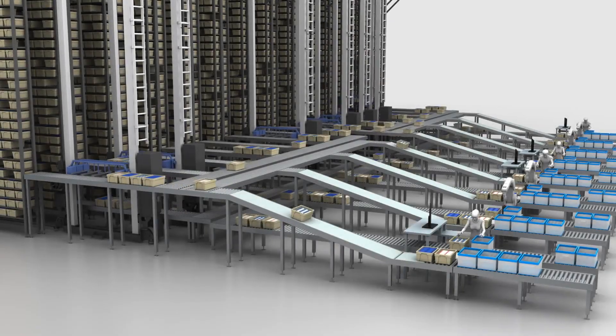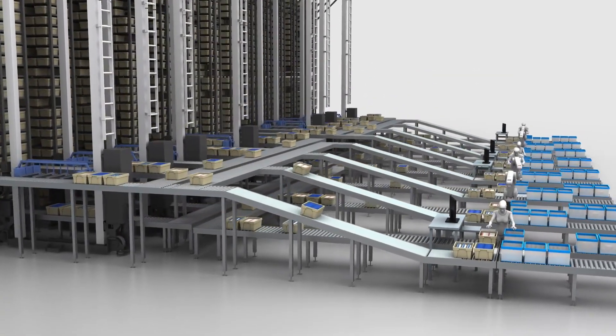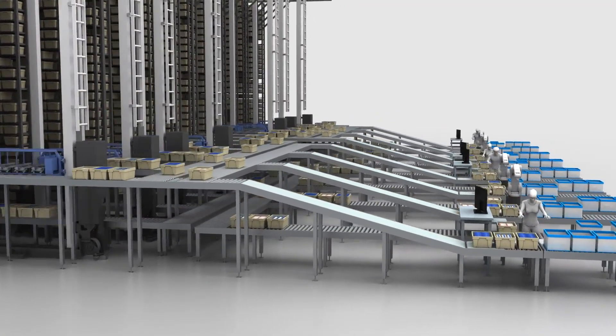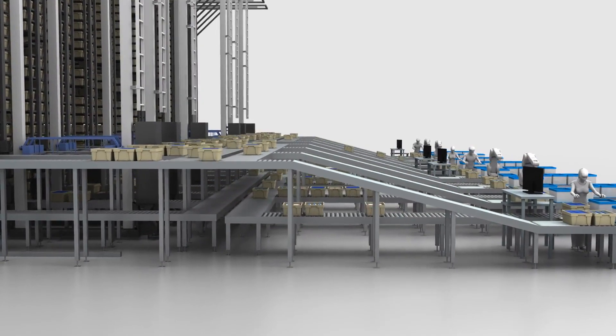Generally, as SKUs increase, conveyance lines connecting to an ASRS and picking stations can become complex, requiring two-tiered structures and more space, and limiting throughput.